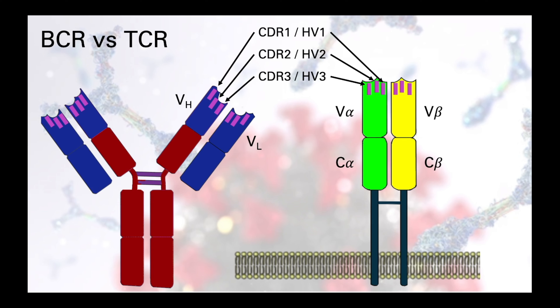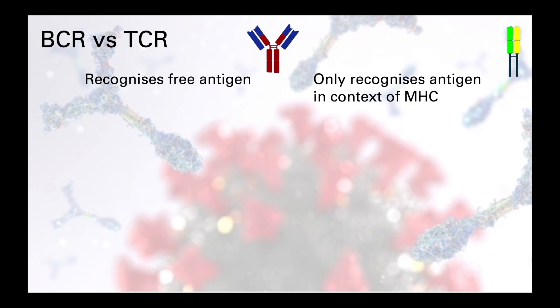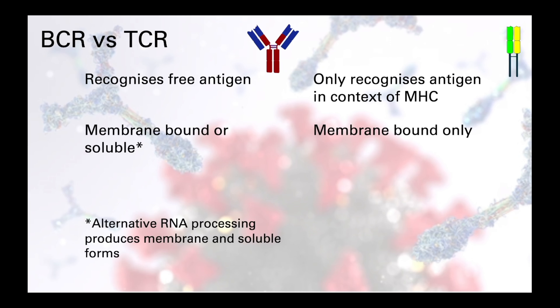Despite the many similarities in the generation of diversity, there are also quite a lot of differences between the receptors and the way they work. B cell receptors can bind to free antigens as well as those presented by other antigen presenting cells, whereas T cell receptors are MHC restricted, requiring the peptide they recognise to be processed and presented in the MHC binding groove. B cell receptors can be membrane bound or free in solution as antibodies, with alternative RNA processing responsible for these two different forms. T cell receptors are always membrane bound.